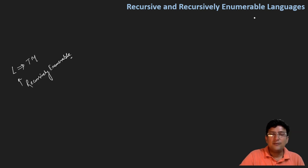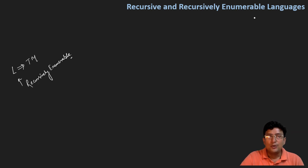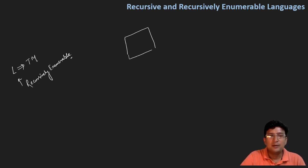और किसी भी valid input जो कि इस language का part होता, वो Turing machine द्वारा recognize कर लिया जाएगा। आइए इसको एक दूसरे तरीके से देखते हैं — मान लेते हैं कि हमारे पास एक language का set है, और यह circle जो है वो language को represent करता है। तो अगर यह Venn diagram है तो उसके हिसाब से हम कह सकते हैं कि जो part circle के बाहर का है, that is the language complement.